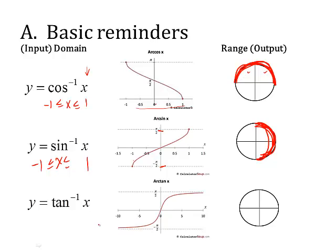For arc tangent, the x values can be anything — the domain is all real numbers. But there is a specific range: values can only come from negative pi over 2 to positive pi over 2, so you're limited to quadrants 1 and 4. If arc tangent is positive, it's quadrant 1. If arc tangent is negative, it's from quadrant 4. Remember, in quadrant 4 we give the reflected names, not the actual names — I'll show you what I mean as we do examples.